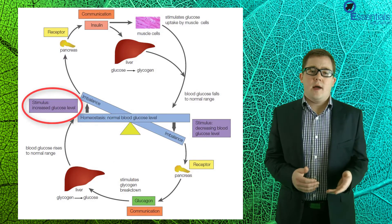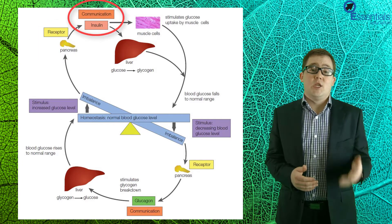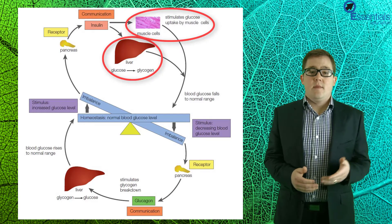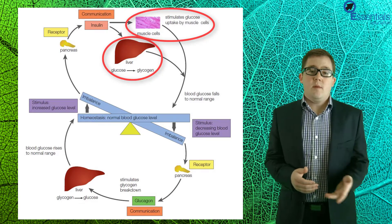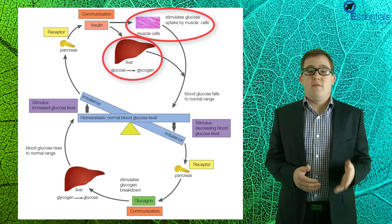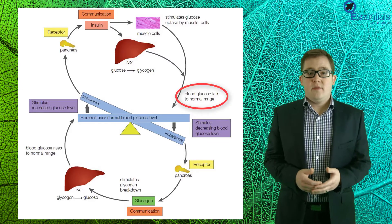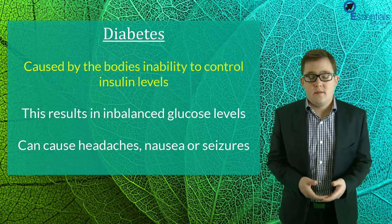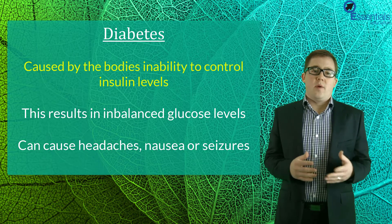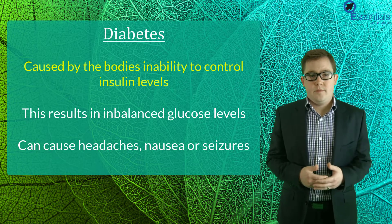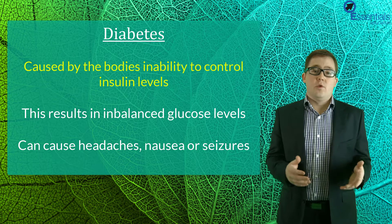If blood glucose levels get too high, the pancreas is stimulated to secrete insulin instead of glucagon. This insulin then travels through the blood to the effectors — in this case muscles and liver cells — which are then stimulated to absorb more glucose and convert it to glycogen for storage. This allows for the lowering of blood glucose levels and maintenance of homeostasis. Controlling blood glucose levels is really important, and the inability to do so can result in conditions such as diabetes. Diabetes occurs as a result of the body's inability to produce or control insulin levels, resulting in imbalanced glucose levels and issues such as headaches, nausea, or even seizures.